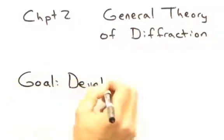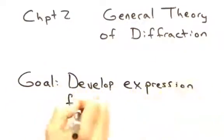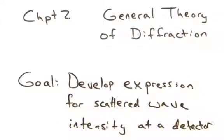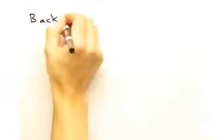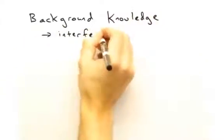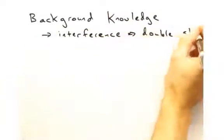So then our goal in this episode would be to determine some sort of mathematical expression for a scattered wave intensity at our detector? Exactly. Great. Well I already know how to build plane waves mathematically and how they interfere with each other like in the double slit experiment. So am I good to go?